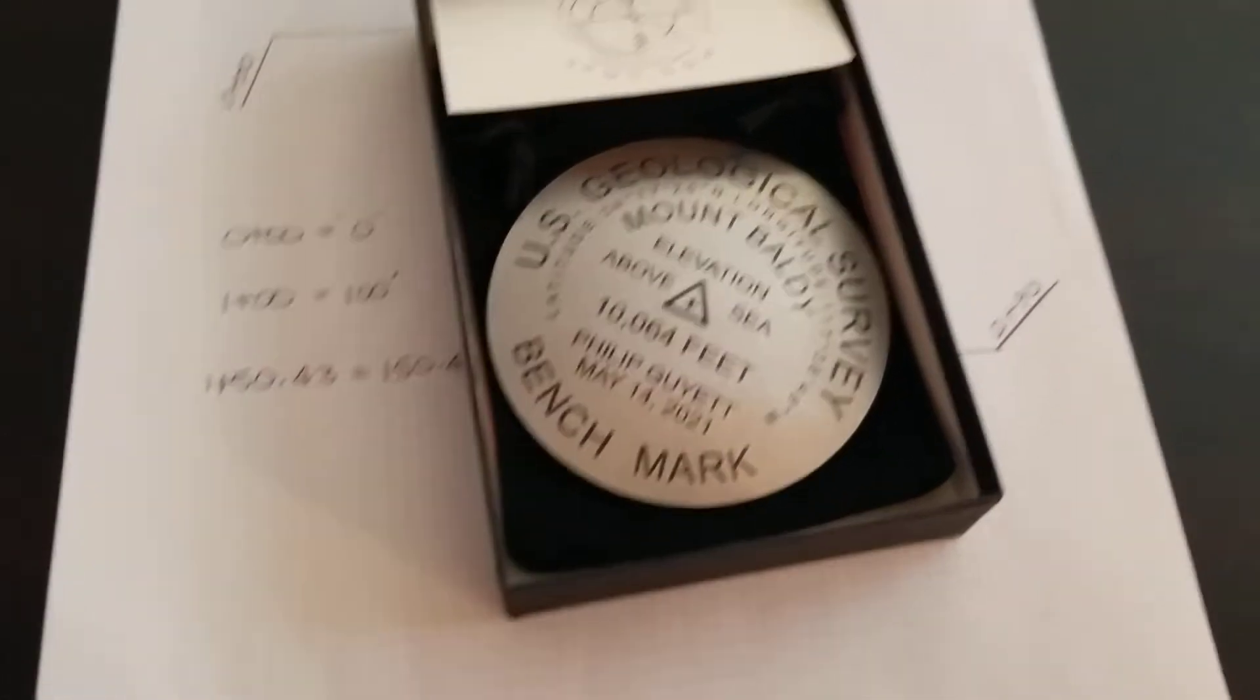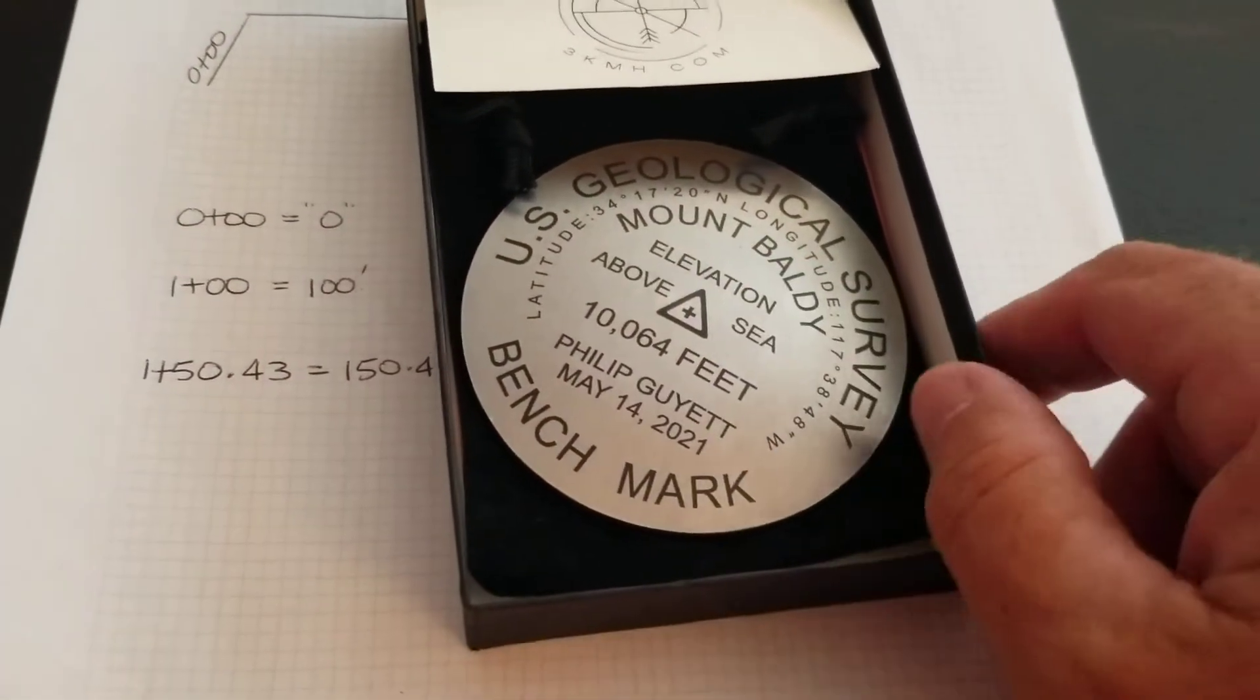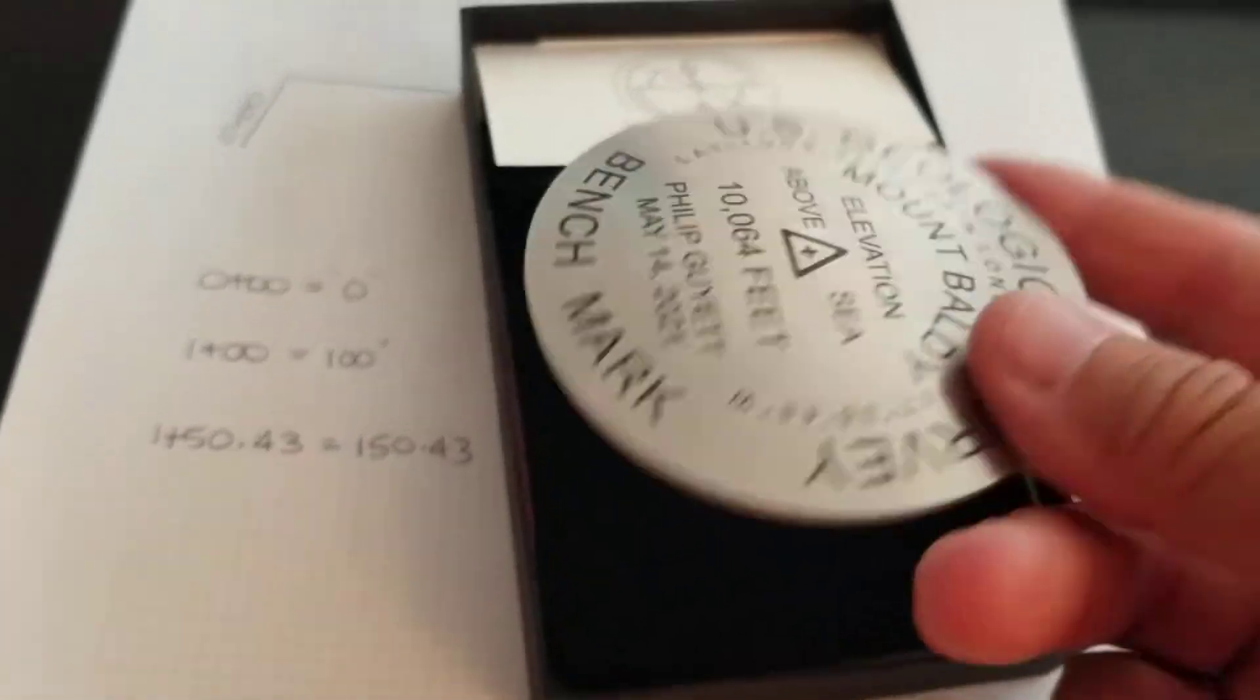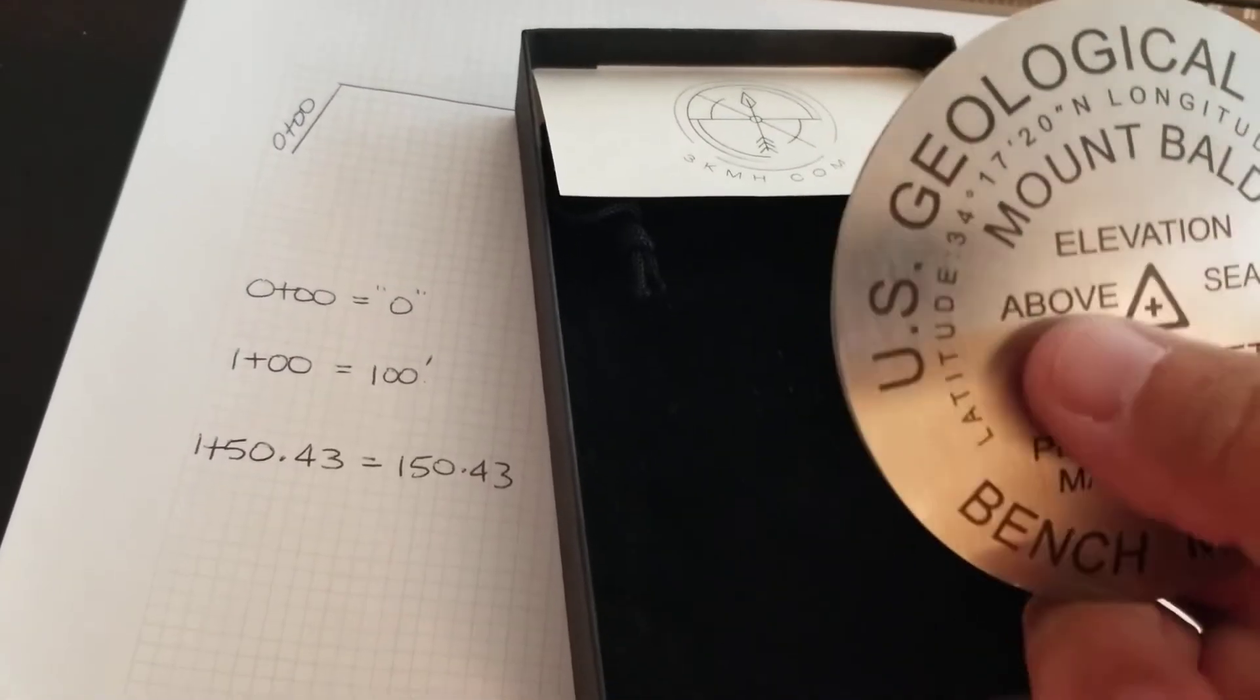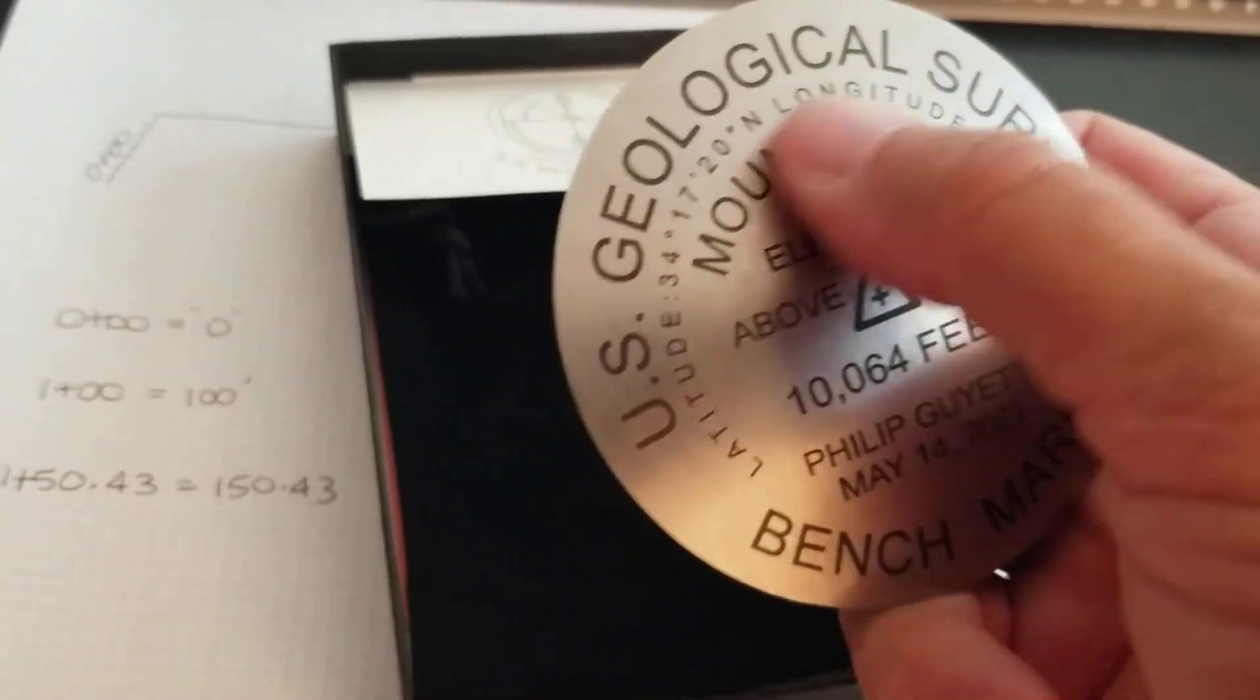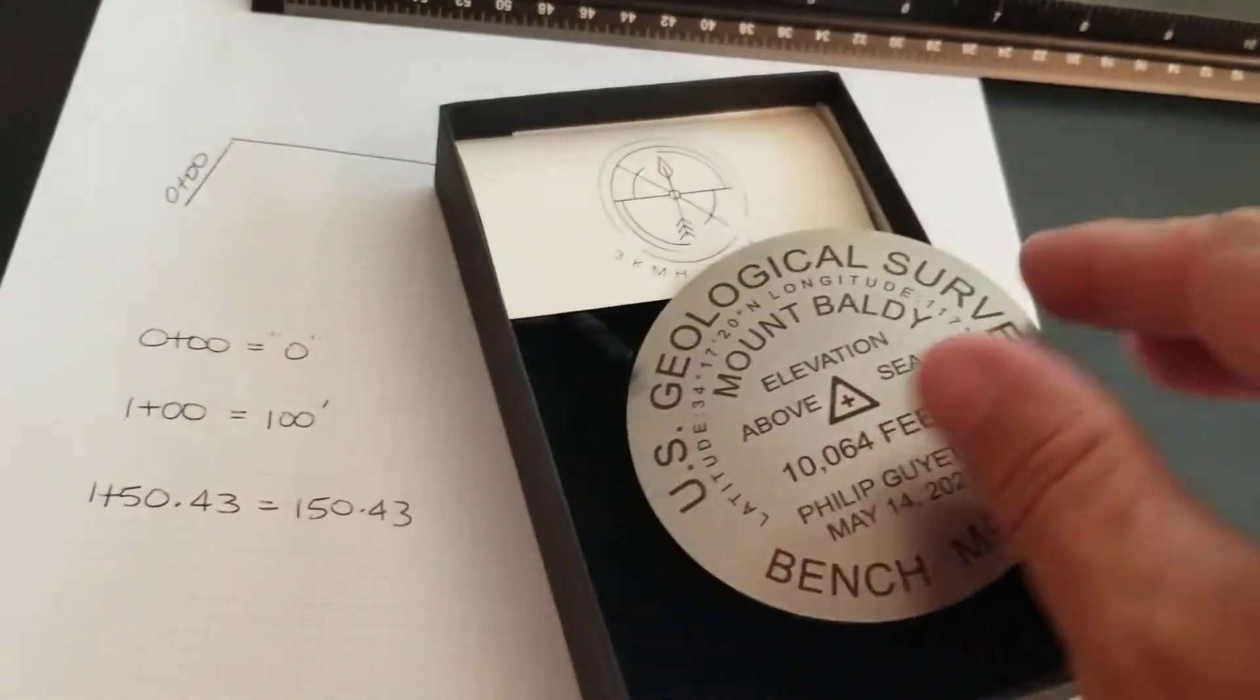Alright, watch till the end of the video and learn how to win or enter to win a custom USGS survey marker. We make these custom - you can put a mountain that you climbed, the name, we'll put in the coordinates and everything, the elevation, you put your company name, logo, and we'll get the coordinates and everything. But watch till the end of the video for all the rules and regulations on how to win one of these and when the contest ends.